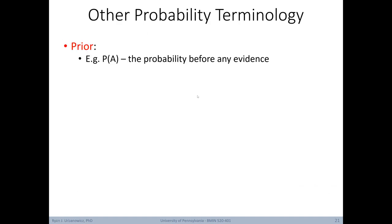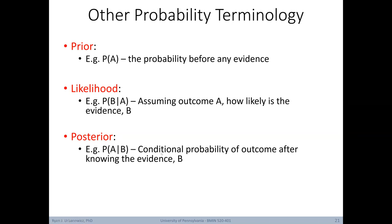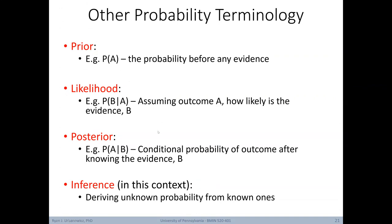Let's also discuss some probability terminology. The term 'prior' describes the probability of an event alone before any other evidence was available. 'Likelihood' describes conditional probabilities — for example, the probability of B given A — or saying: assuming outcome A, how likely is the evidence B? 'Posterior' describes the conditional probability of the outcome after knowing the evidence — the probability of A given B. These terms are relative to A being our target outcome and B being some supporting evidence. And 'inference' is deriving unknown probabilities from known ones.